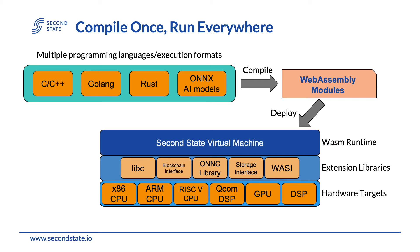After these applications are compiled into WebAssembly modules, Second State Virtual Machine, which is the general WebAssembly execution runtime, takes the responsibility to run these applications on multiple hardware platforms. For running domain-specific applications, we integrate SSVM with several extension libraries and allow users to leverage hardware acceleration by runtime customization. With this project, applications can be deployed to various target platforms easily.